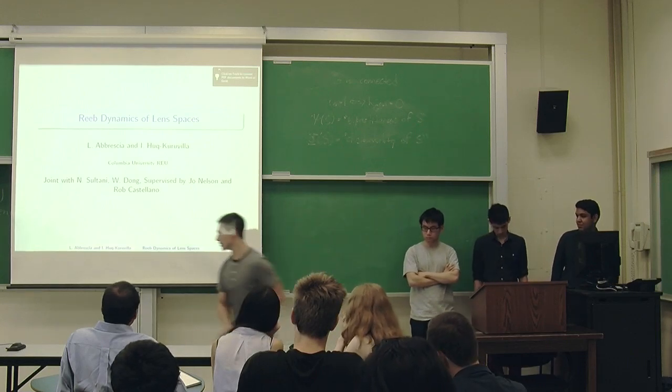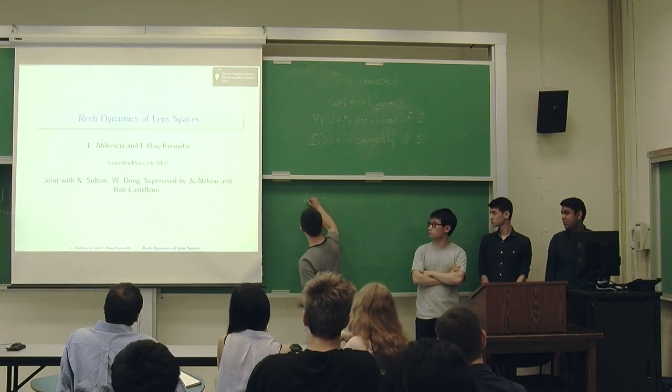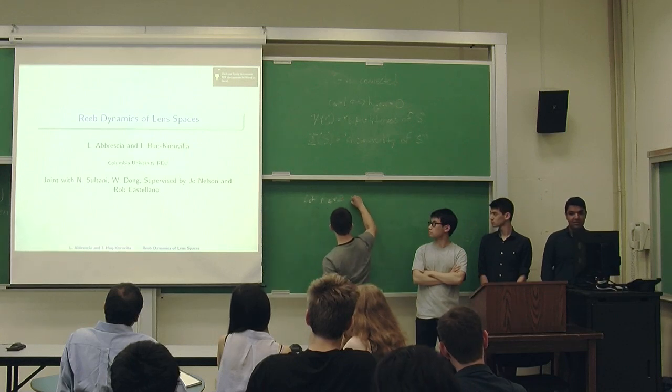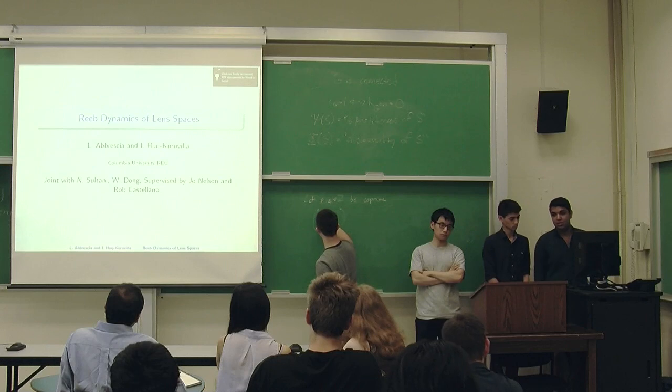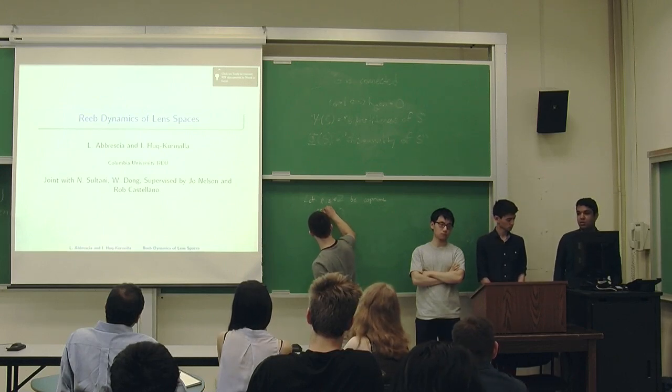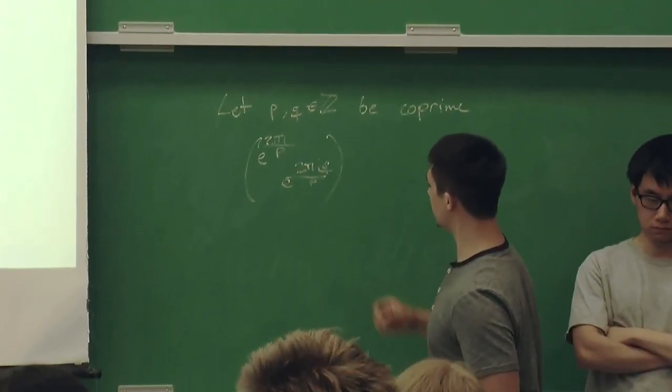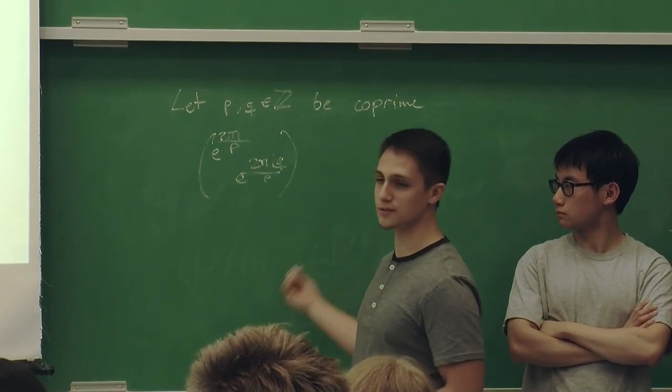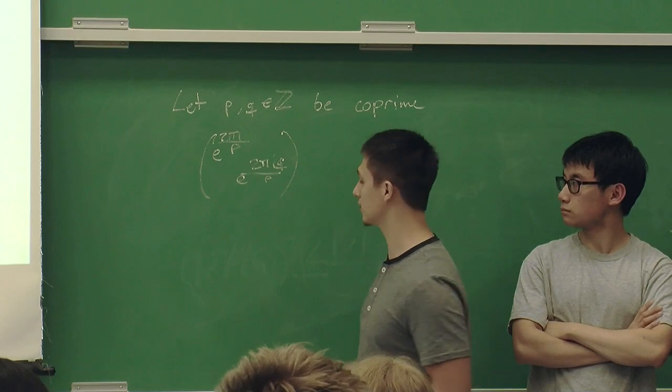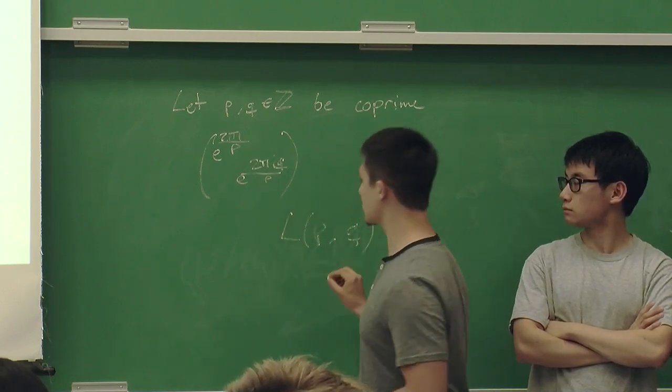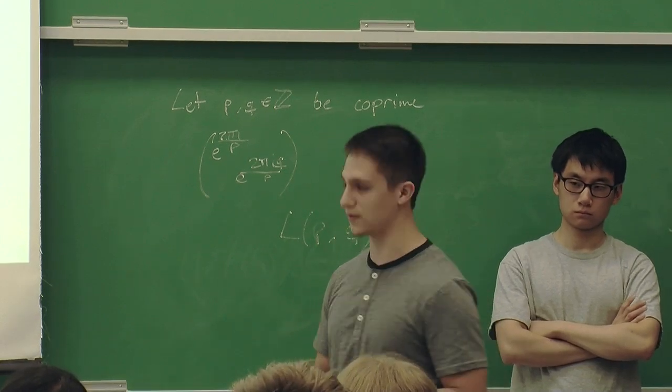So lens spaces are quotients of S3 by ZP actions. More precisely, let P and Q be coprime, and define the action given by this matrix. We're defining the action of this on S3, and this makes sense because S3 is in C2. The quotient of this action on S3 is called the lens space LPQ. I'm going to leave this here because it will be useful for Eric to use later.